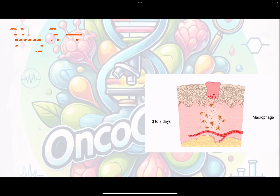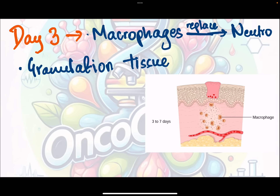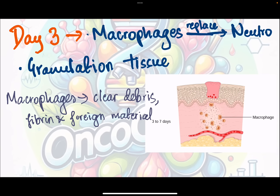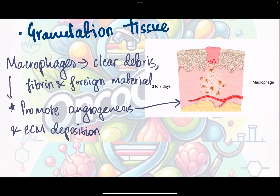On day three, macrophages replace the neutrophils and granulation tissue starts laying down. Macrophages clear the debris, fibrin, and foreign material formed in the wound, and also promote angiogenesis, which provides nutrition to the growing tissue and extracellular matrix deposition.